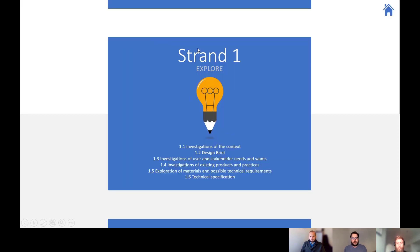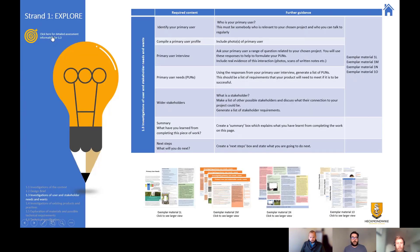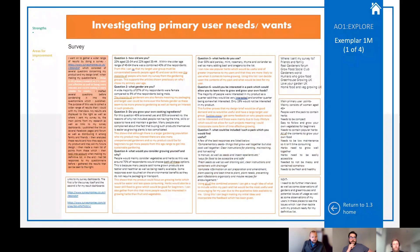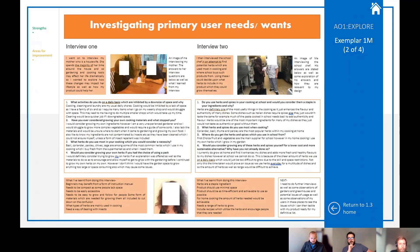Now we need to talk about the stakeholder needs and wants and the primary user needs and wants. It's probably a good idea to start with an exemplar. This is quite a comprehensive example with plenty of detail over four different slides. It contains excellent primary feedback — a questionnaire where the answers are in lots of detail. It's not a closed yes/no question; it leaves the respondent plenty of opportunity to expand on their answers.